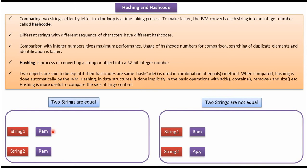To make it faster, the JVM will convert each string to a hashcode. Then it will compare the hashcode values. If both hashcode values are equal, then these two strings are equal. If both hashcodes are different, then these two strings are different.